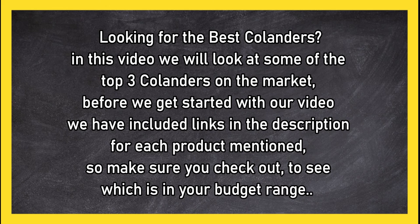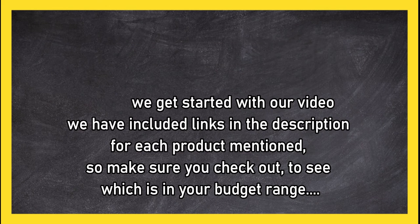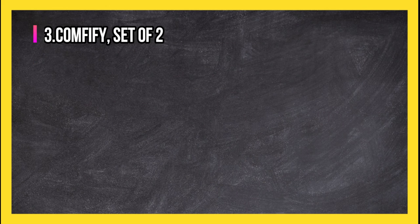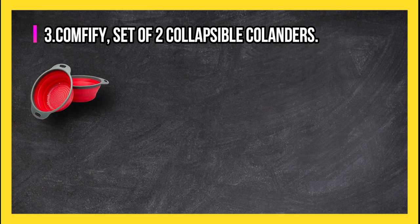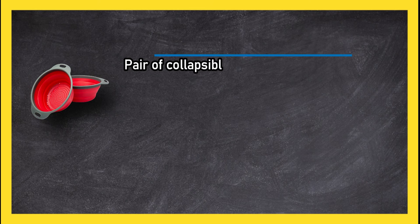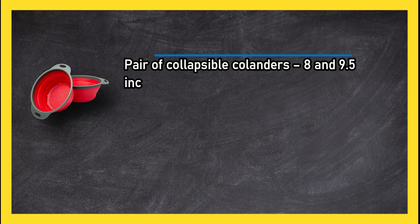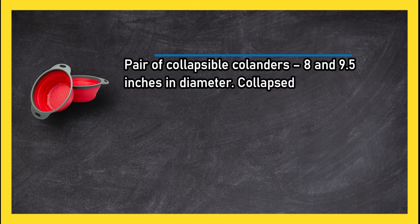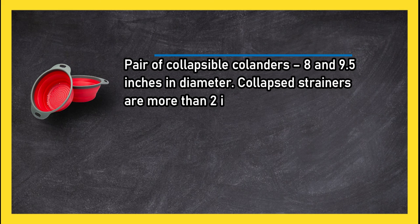At number three: Comfified set of two collapsible colanders. Pair of collapsible colanders 8 and 9.5 inches in diameter. Collapsed strainers are more than two inches high.